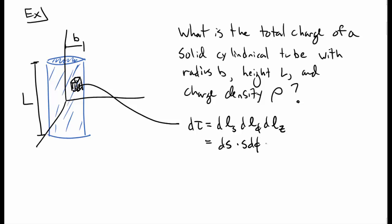So we write dls, dl phi, dl z, and we write those out in terms of the coordinates ds, s d phi, and dz. So the little bit of charge of this tiny cube is rho d tau, where d tau is that thing up there.